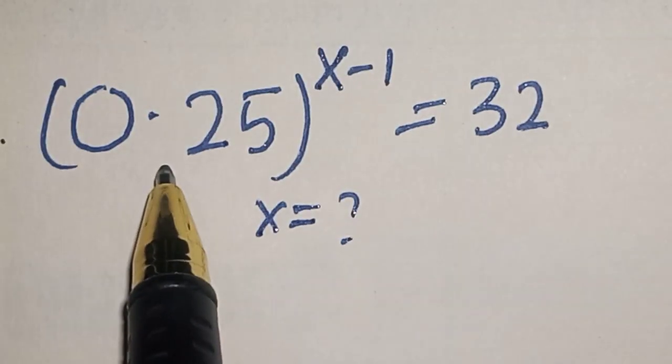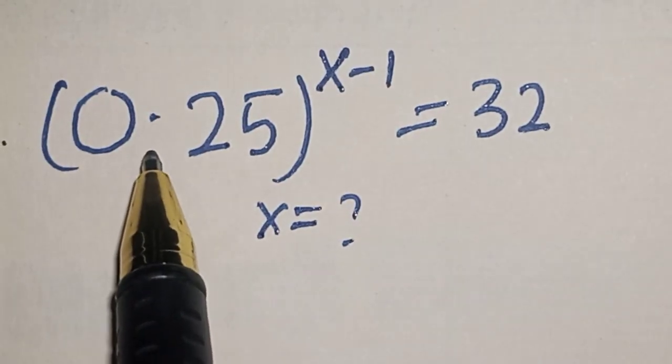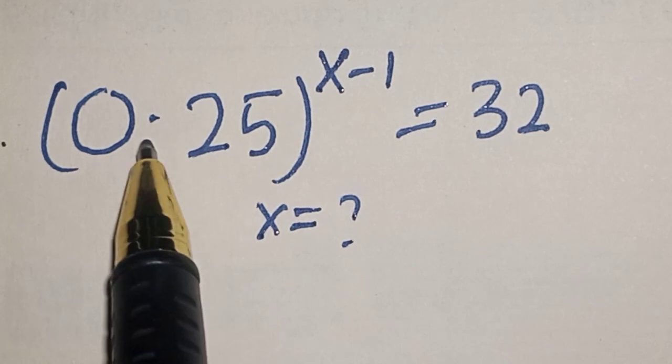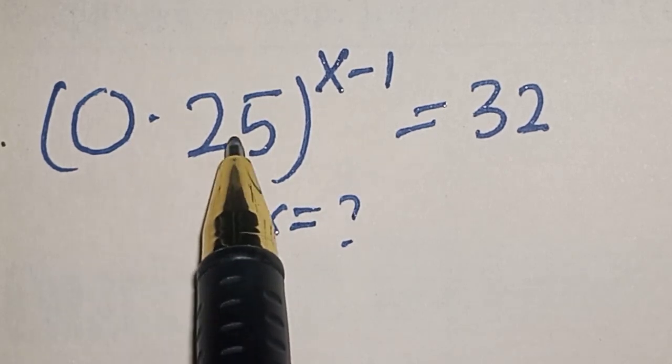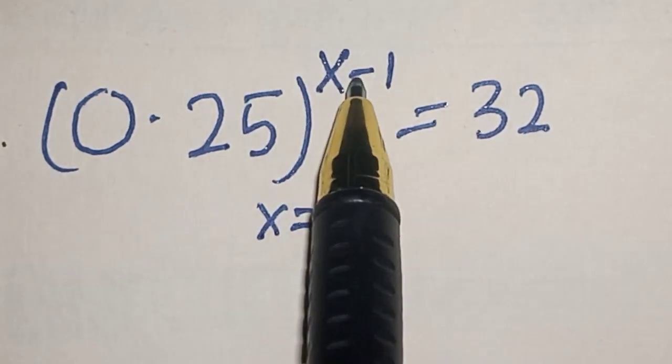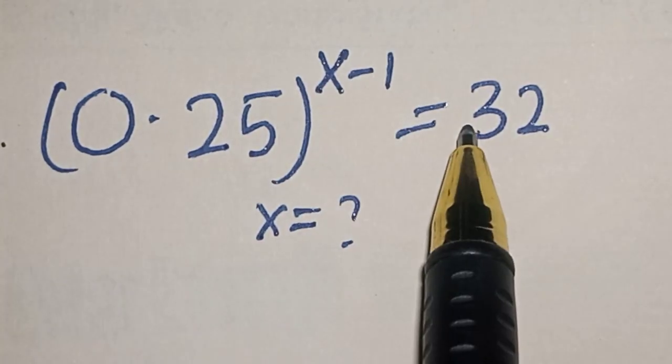Hello, welcome to Math Gist. In this class we want to find the value of s from this equation: 0.25 raised to the power x minus 1 is equal to 32.